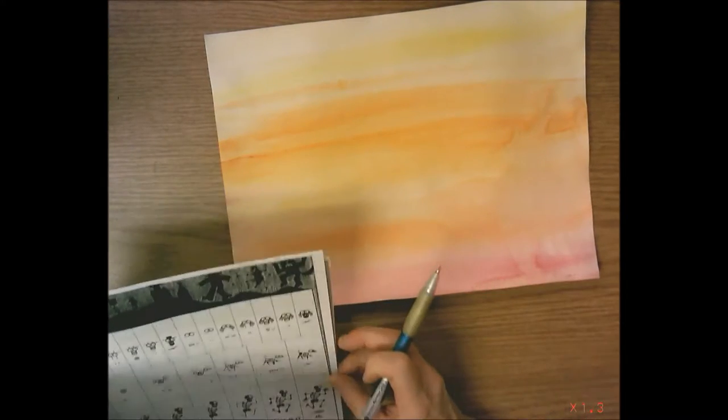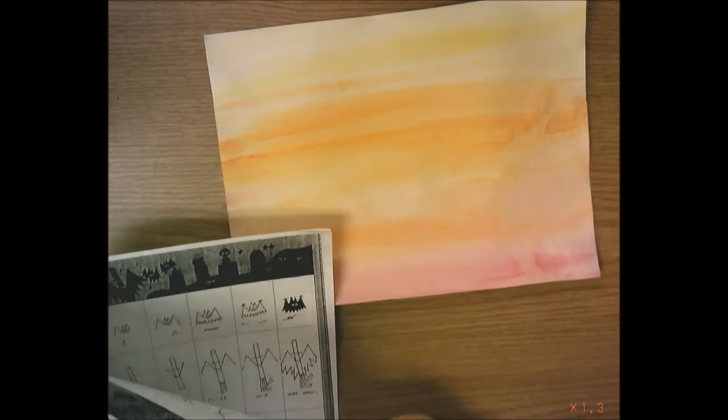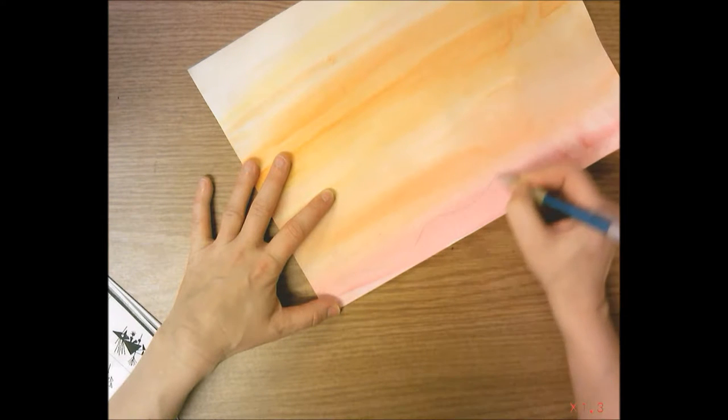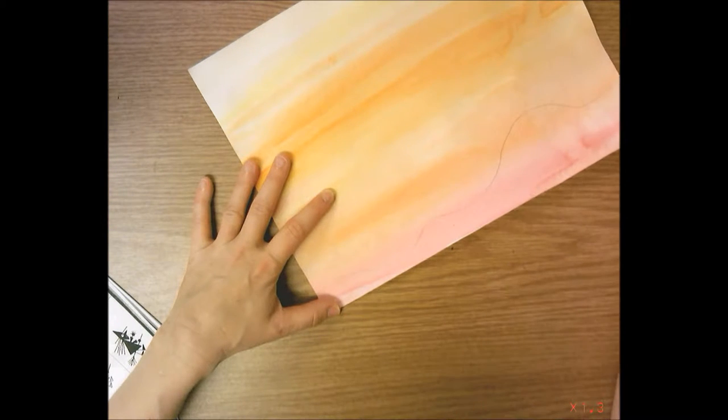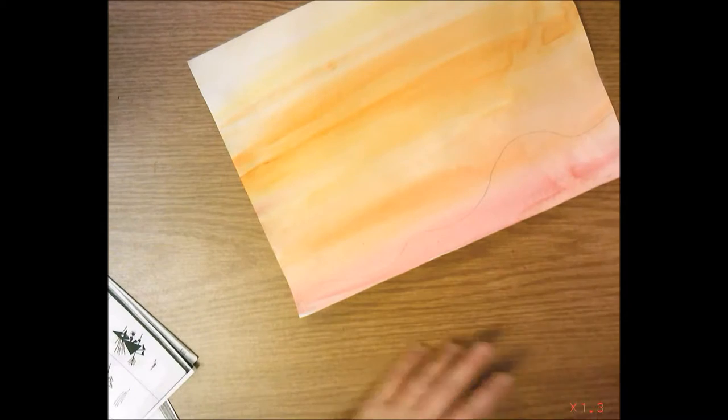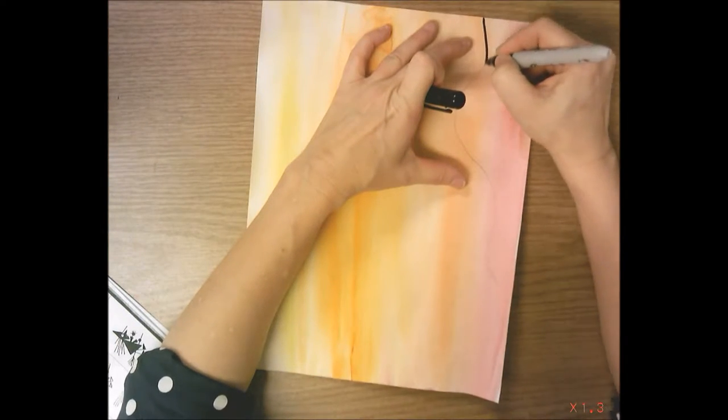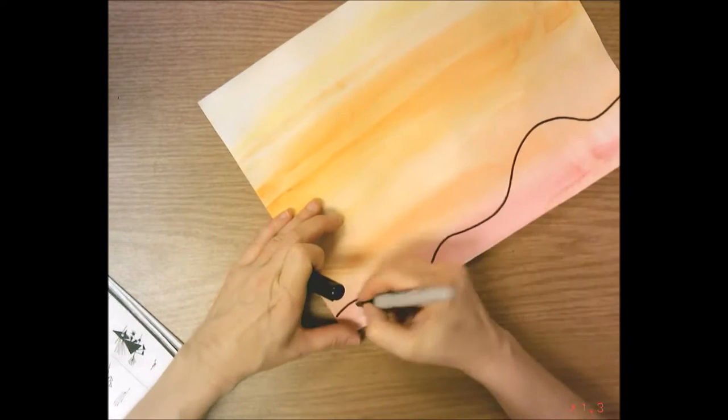I think I'm going to do the ground and draw a wavy line across. Then I'll use my black marker to trace that line, and then I'm going to add some grass.